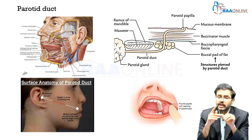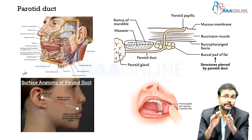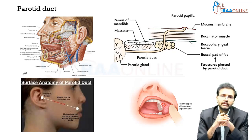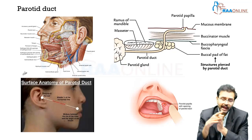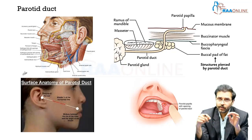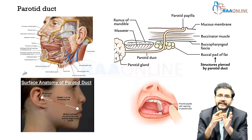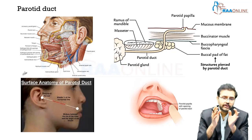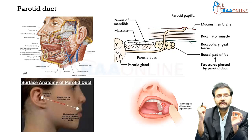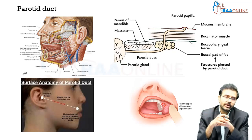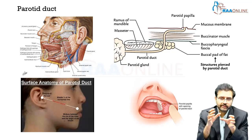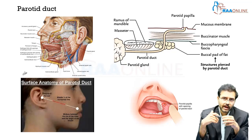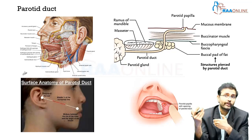The parotid duct is actually bidigitally palpable over the masseter muscle. The anatomical landmark to identify the course of the parotid duct is an arbitrary line drawn from the tragus to the mid portion of the upper lip. The middle one-third to one-fourth of this line corresponds to the course of the parotid duct.